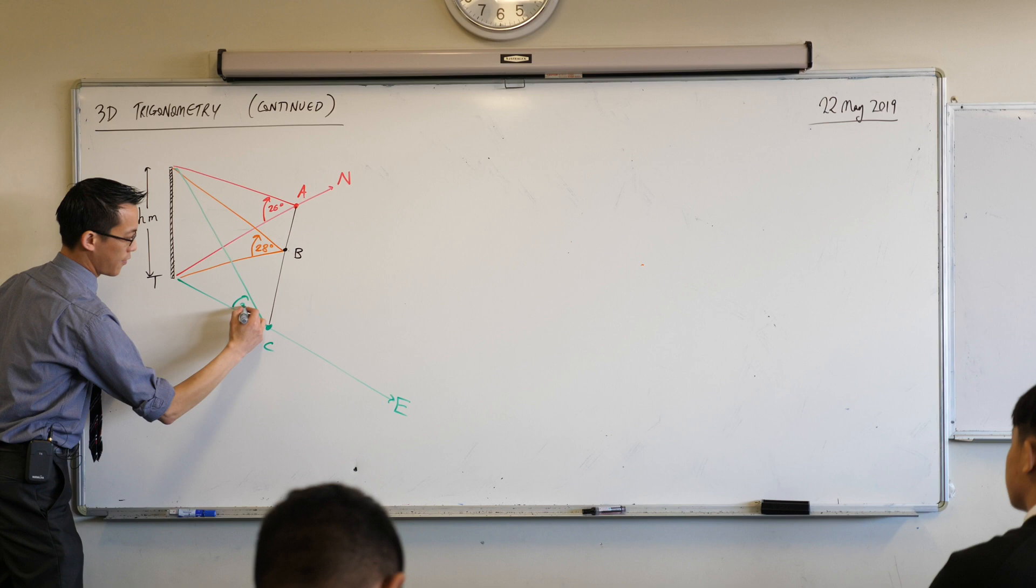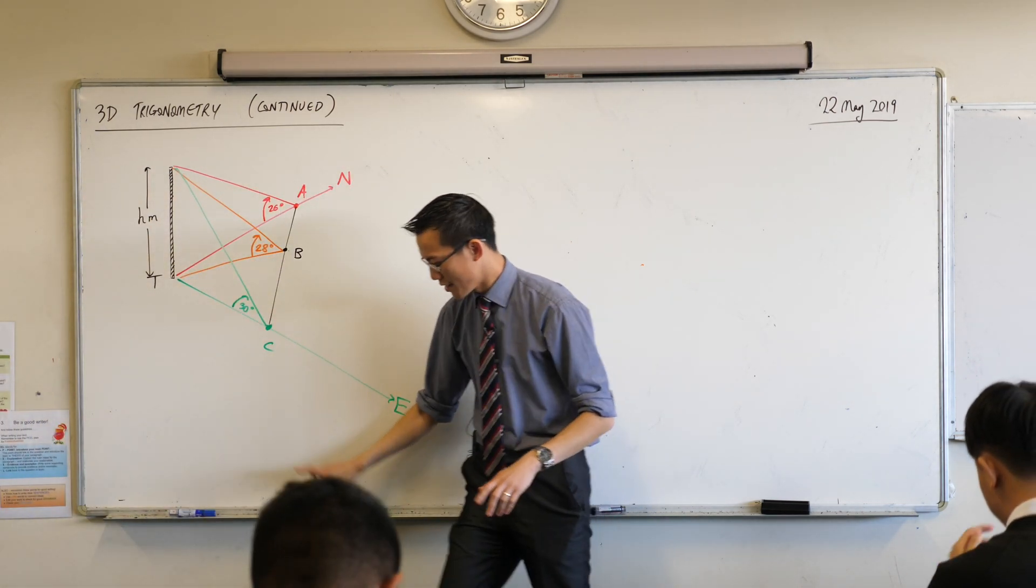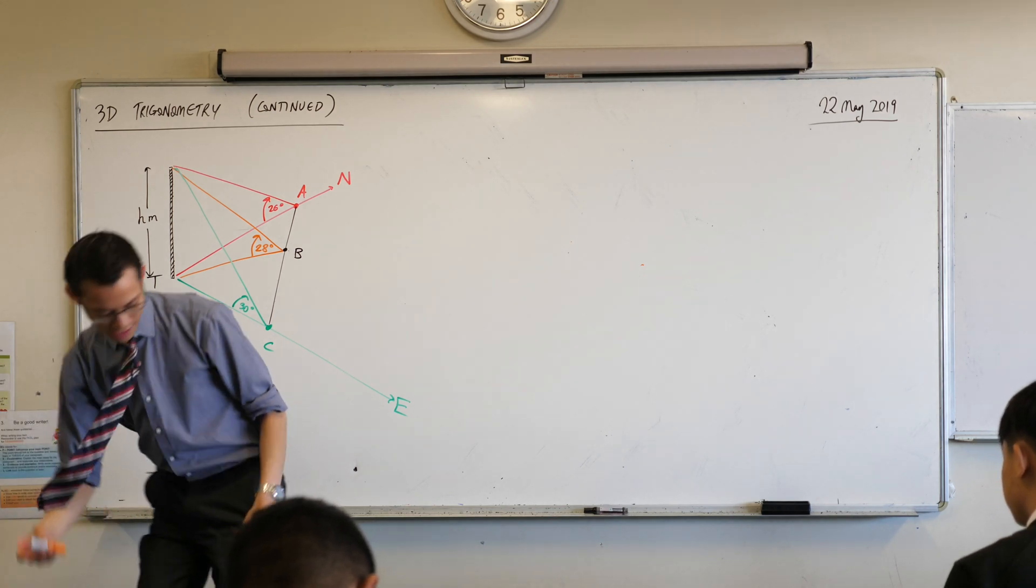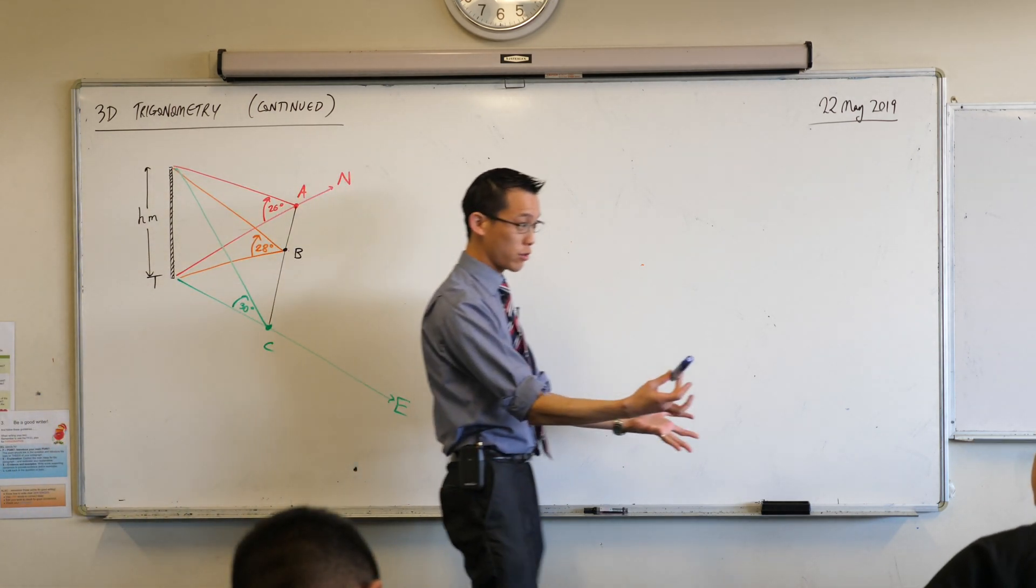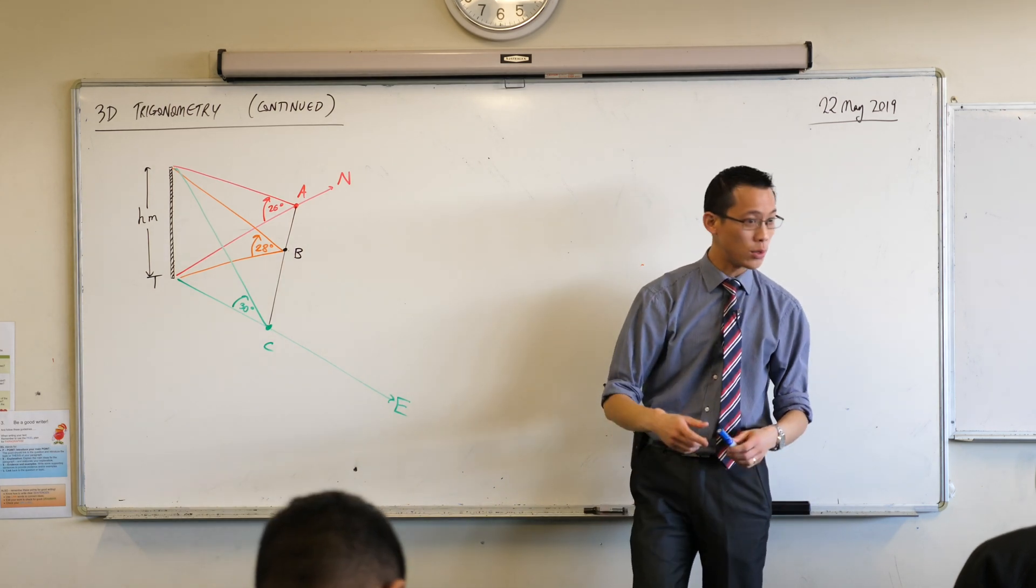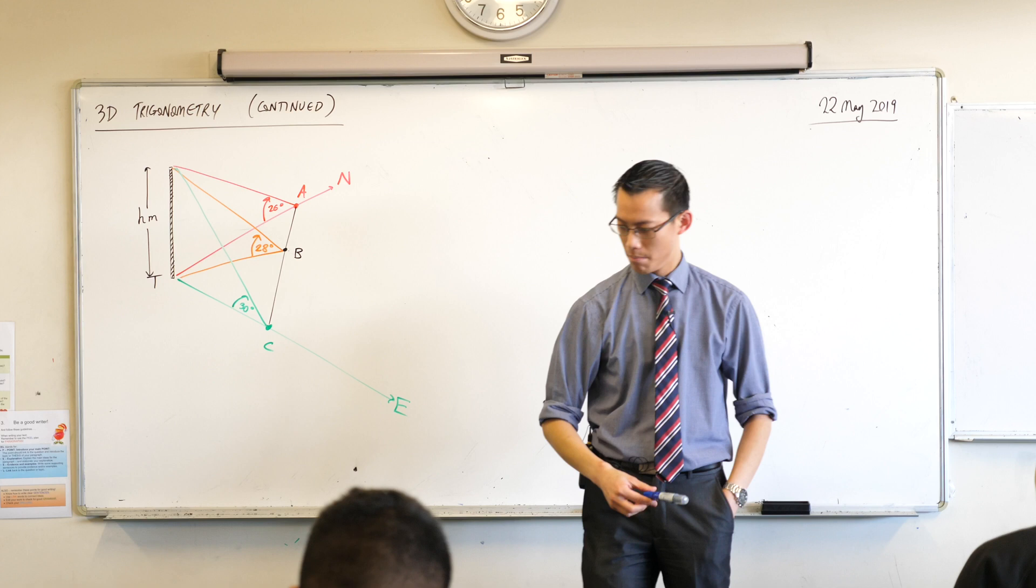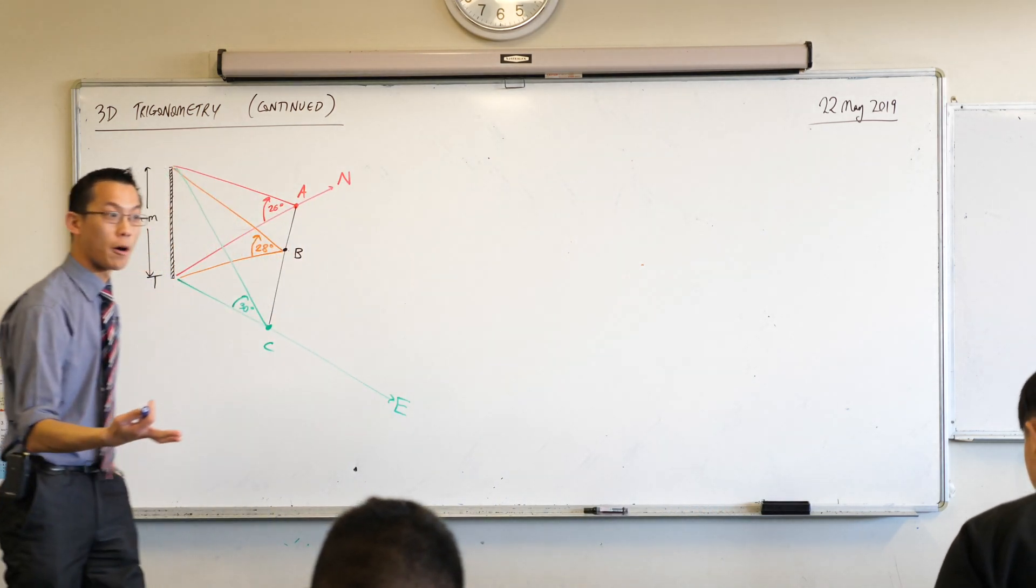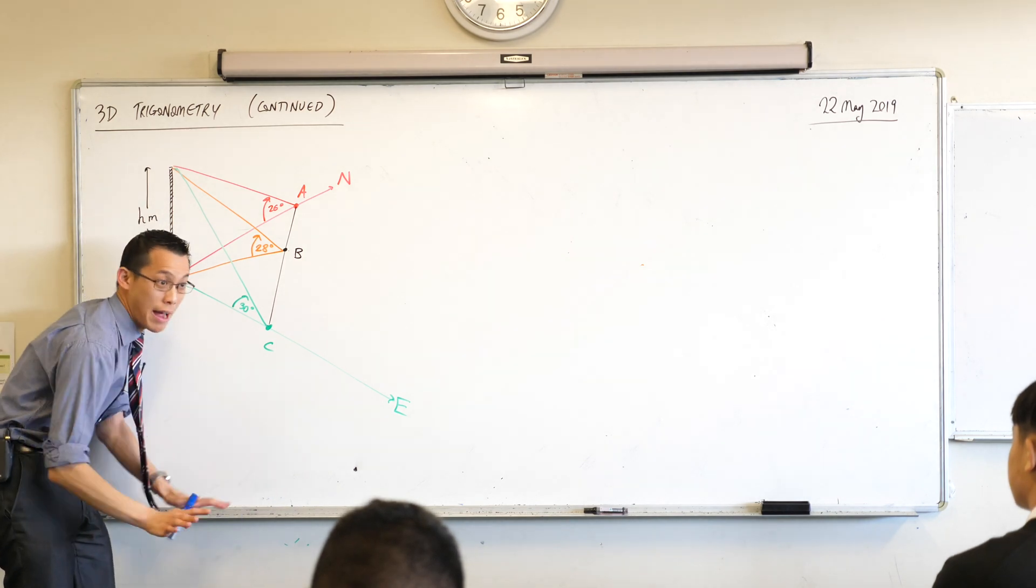There we go. And this is my angle of elevation from C, and it's my 30 degrees. Now, there's just one last thing. I'm so uncoordinated. There's one last thing that we need. That's the actual question. What are they actually asking for? Look carefully. Bearing of B from the tower.